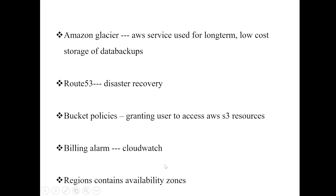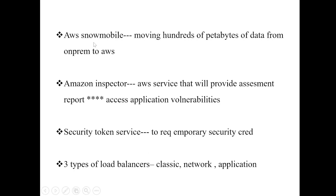AWS Snowmobile is used for moving hundreds of petabytes of data from on-premises to AWS. Amazon Inspector is an AWS service that provides an assessment report and is also used to assess application vulnerabilities. Whenever you see the term 'application vulnerabilities,' recall Amazon Inspector.